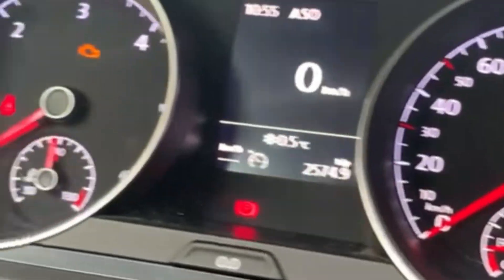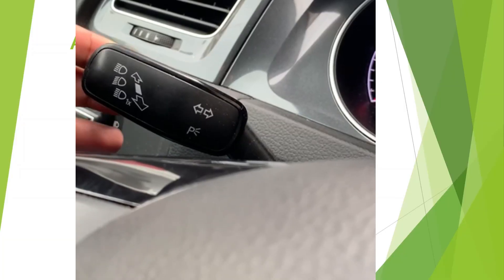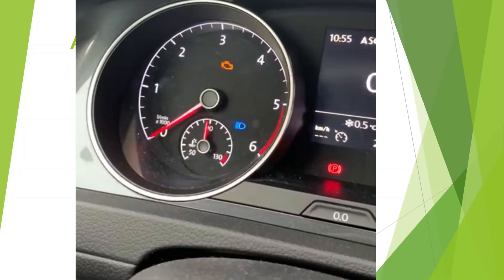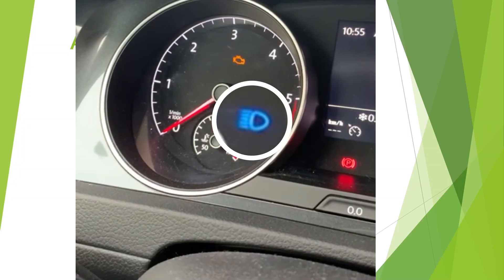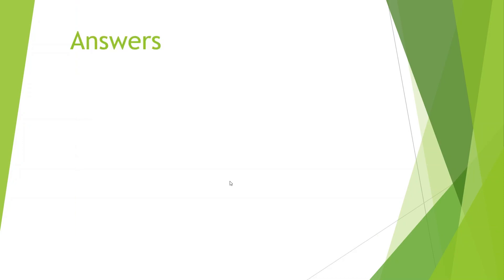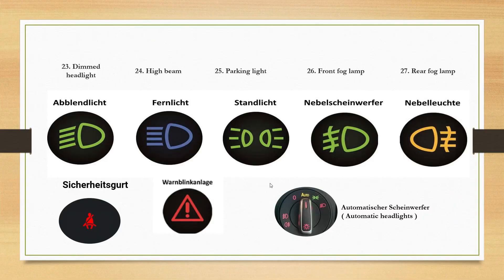For the Fernlicht — the high beam — push the knob downwards and you see this blue indicator. These are the different lights we covered in our first part: Abblendlicht means dim light, Fernlicht means high beam, Standlicht means parking light.